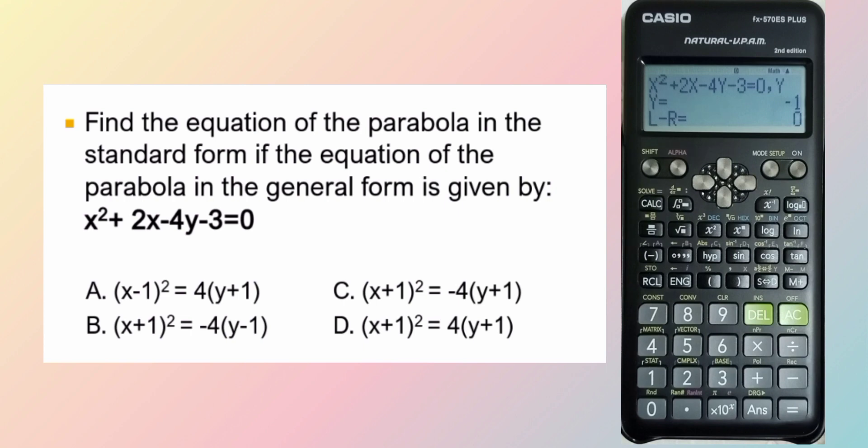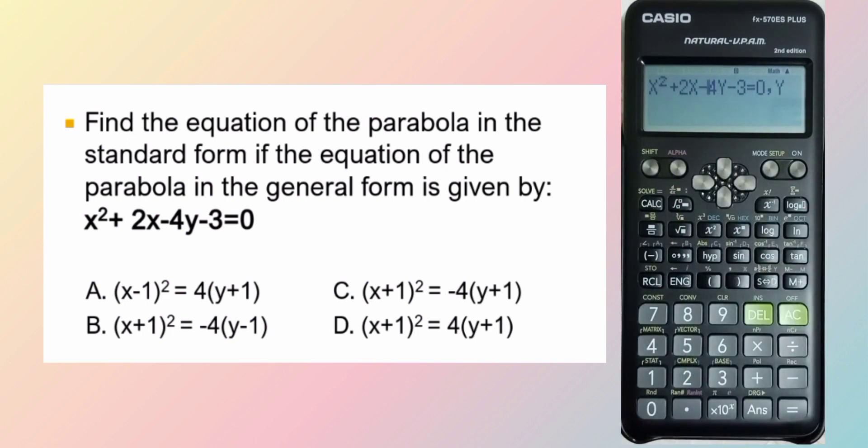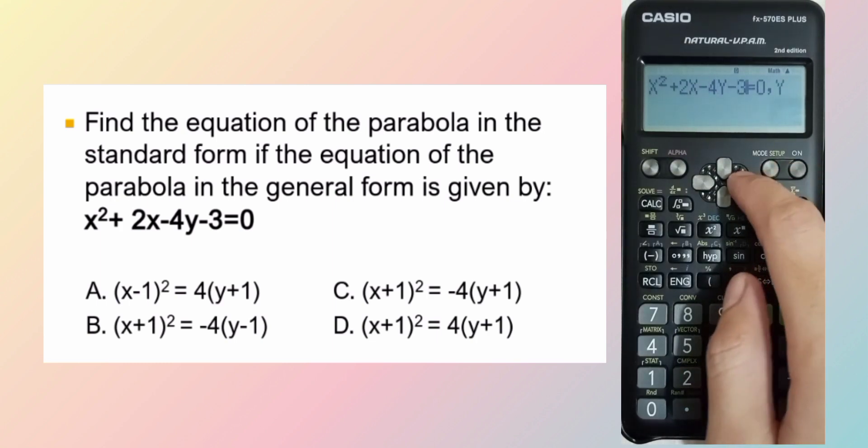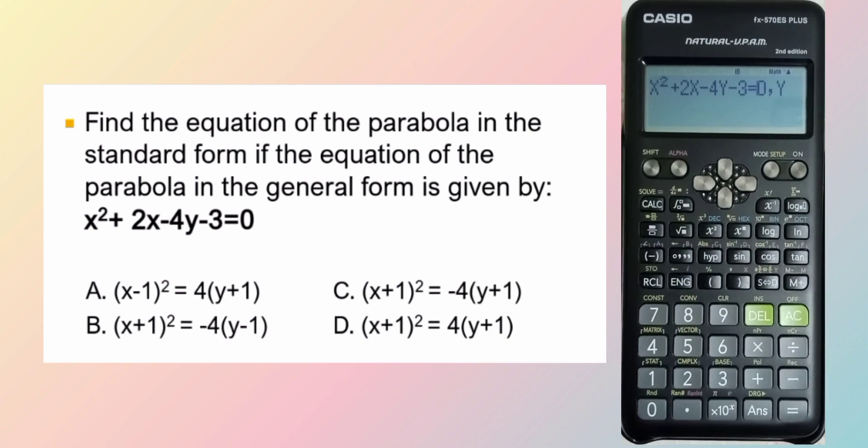Ngayon, balikan po natin ang ating general form. When we convert the general form to standard form, si x squared dahil isa lang dapat ang squared ng parabola. Nasa kabila yung squared. Nasa kanan yung walang squared. Therefore, automatic na magiging 4. Dito tayo sa d. Plus 4. Hindi siya negative 4. Letter d is the answer.